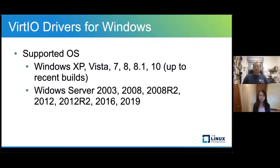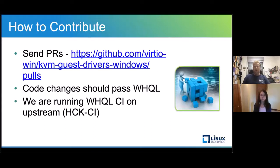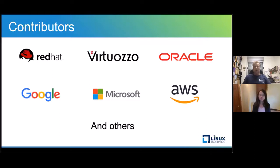For Windows 10 we also support the ARM64 platform. To contribute, please send pull requests. The code changes should pass Microsoft certifications, but don't worry — we are running CI on the upstream, so you're covered for that. The main contributors are coming from Red Hat, but we also had contributions from Grütiloso, Oracle, Google, Microsoft, AWS, and others.